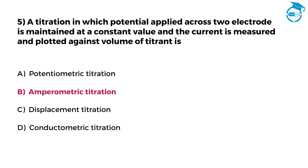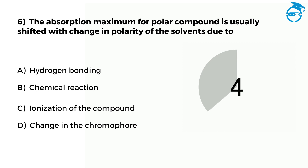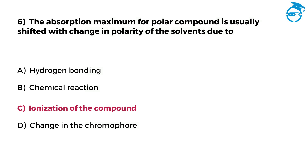Few more questions left — let's move ahead and take the challenge. The absorption maximum for a polar compound is usually shifted with change in polarity of the solvents due to: Option A: Hydrogen bonding. Option B: Chemical reaction. Option C: Ionization of the compound. Option D: Change in the chromophore. The right option is C, that is ionization of the compound.